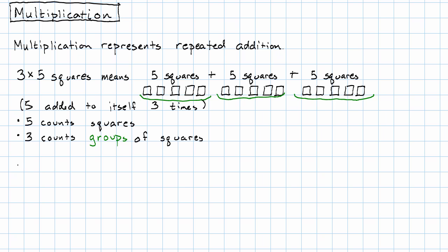So what we're seeing in this picture is 3 groups times 5 squares, and I'm going to add something to that: 5 squares per group. This word per just means for every.